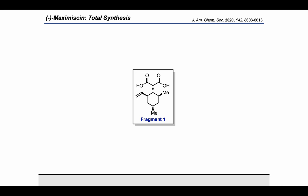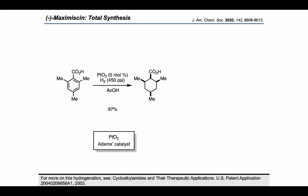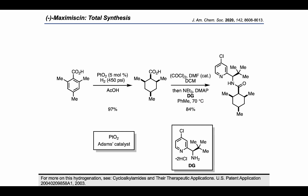Let's take a look at Fragment 1 and go through the steps they used to access it. Starting from mesitylene carboxylic acid, they used Adam's catalyst to carry out hydrogenation to obtain the all-cis mesoacid. Then, treatment with oxalyl chloride and catalytic DMF activated the carboxylic acid for coupling with the chiral directing group shown. It's important to note that once we've attached the chiral directing group, the methyl groups on the left and right are now diastereotopic.